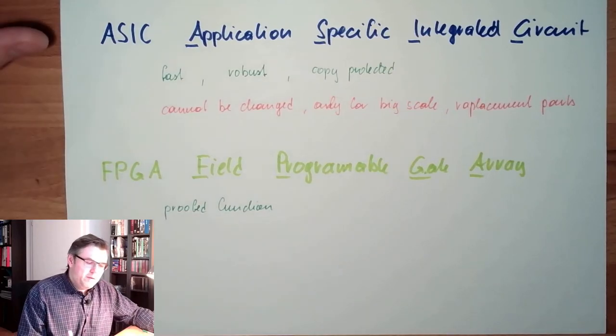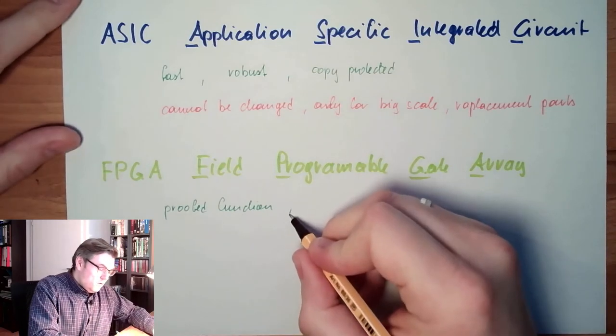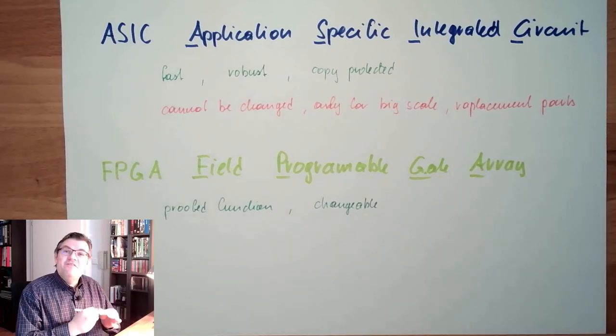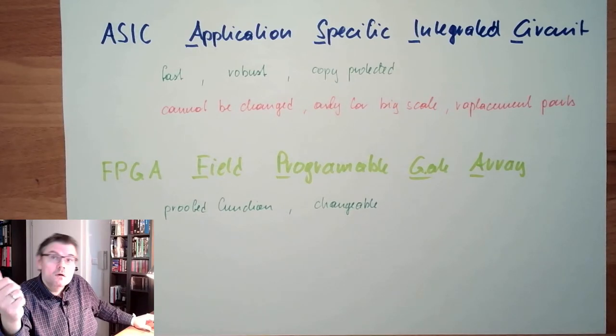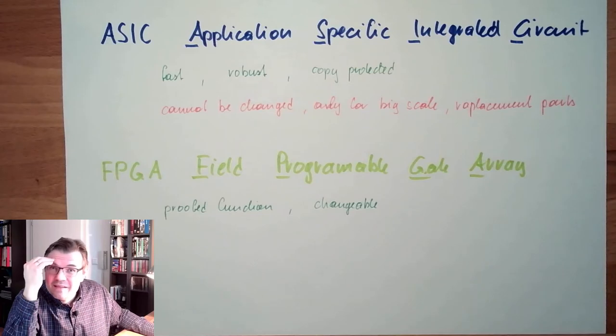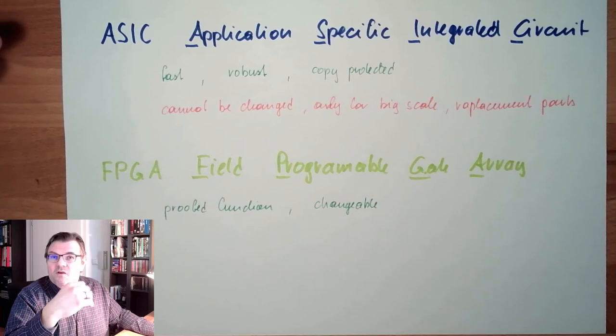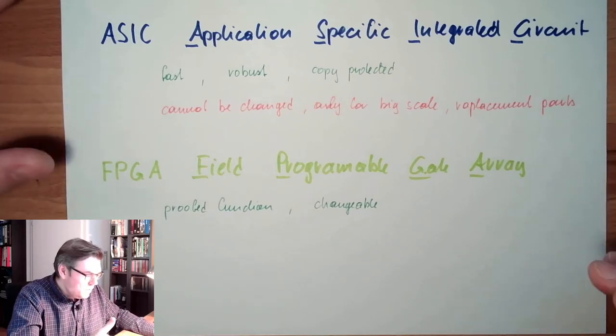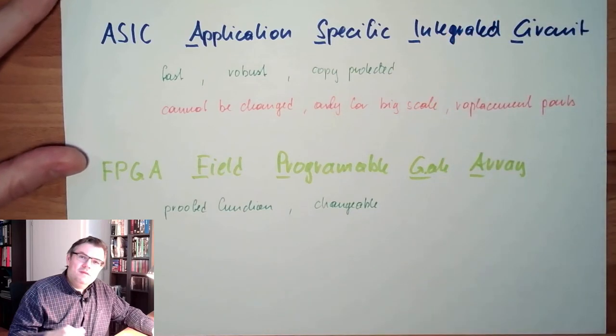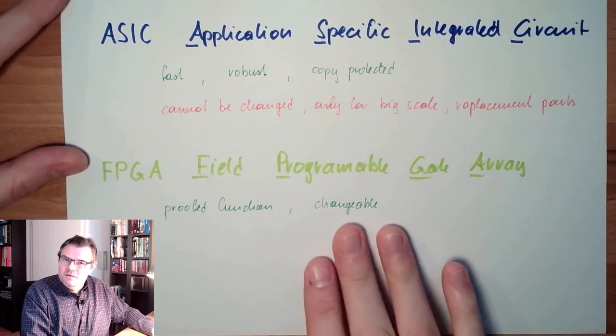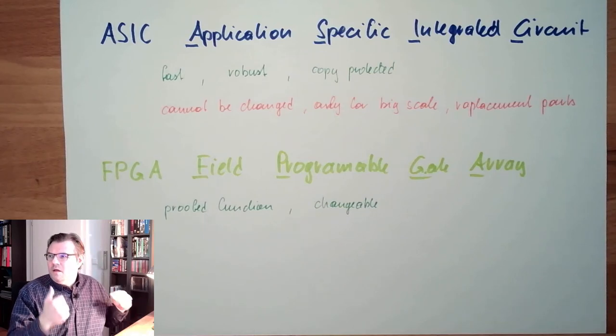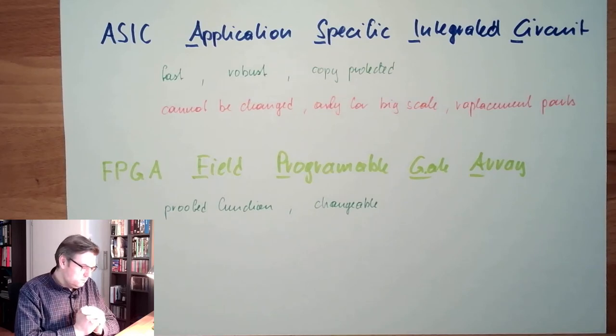This is a huge benefit in the field programmable gate array. And programmable means changeable. This means even if I have a failure in my logic, I program it with a different logic working. I can change it, so I do not need to be that accurate. I need to be accurate, of course, but I'm not taking that big of a risk like an ASIC. So the costs during development are smaller, which also reflects into shorter cycle times.